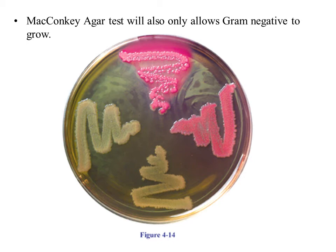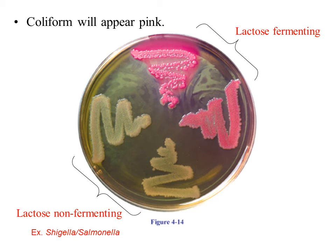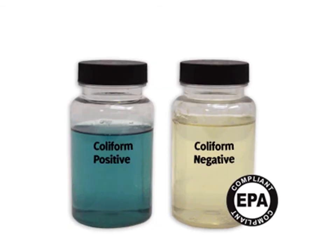A different test that gives very similar results is the MacConkey agar test. It is also selective and differential — it selects for gram-negative and restricts gram-positive from growing. Coliforms will appear pink when grown on the MacConkey agar. Non-lactose fermenting organisms will be clear or non-pink. The presence of coliforms in water is indicative of impure water and poor sewage treatment.